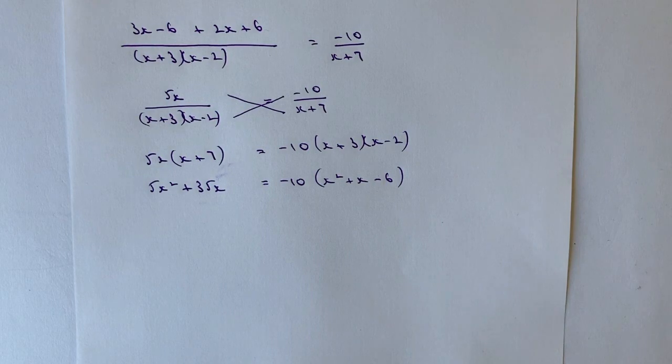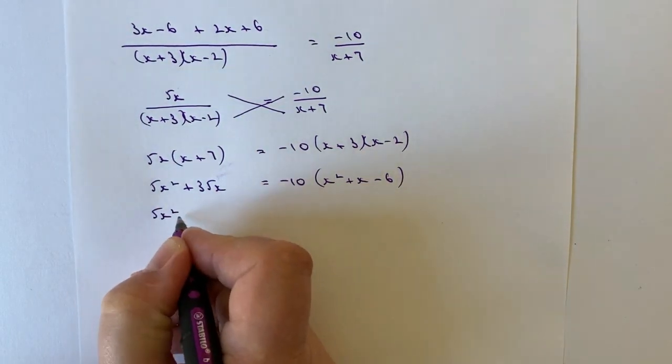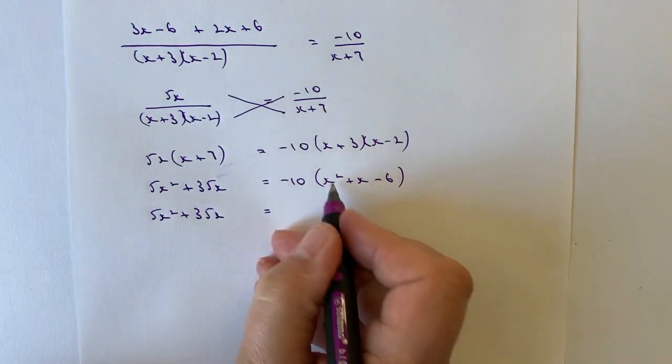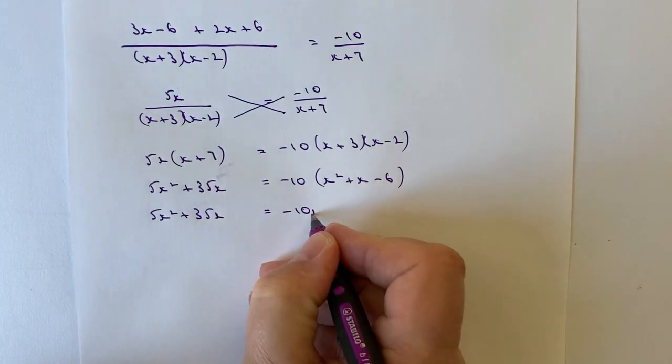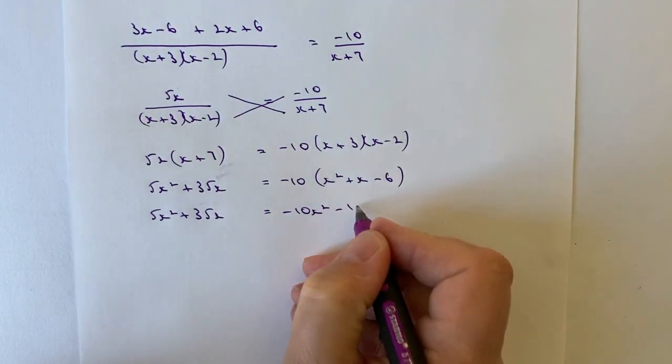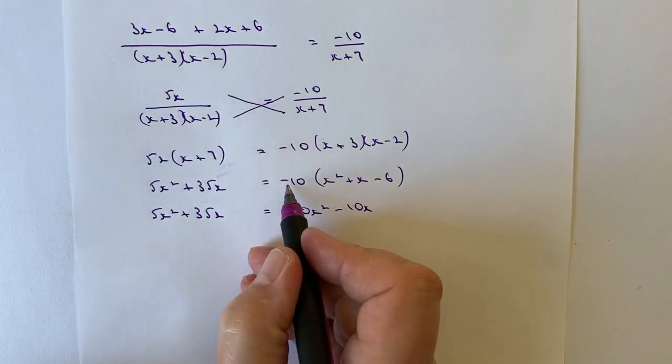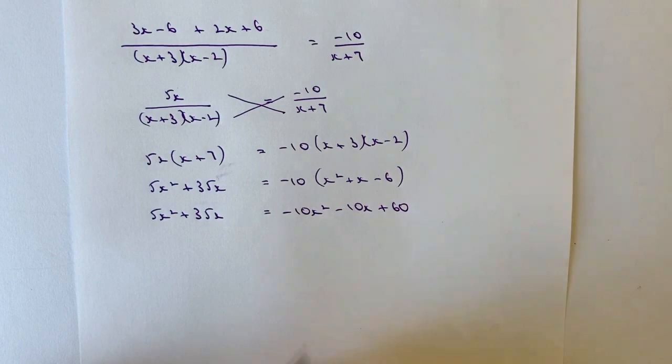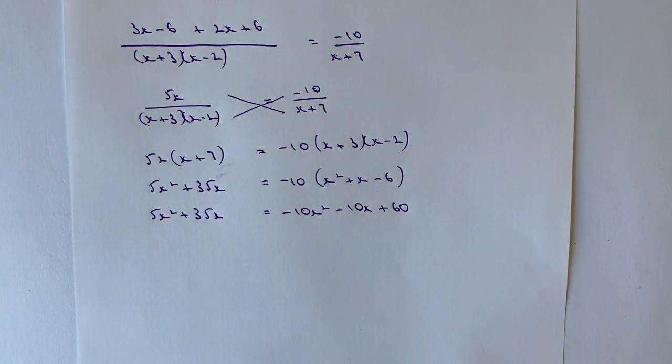Let's now deal with getting rid of these brackets on the right-hand side. I'm going to leave the left as it is. So 5x squared plus 35x equals minus 10x squared minus 10x, and a minus 10 times a minus 6 is going to be a plus 60. So now what we need to do is make everything equal to 0, because we're going to get to the point where we should be able to factorize this.